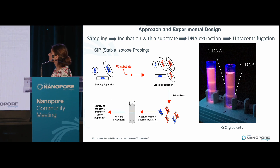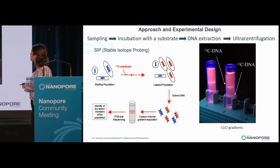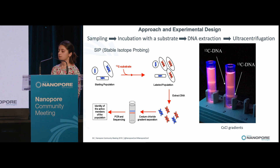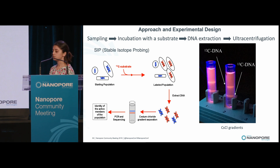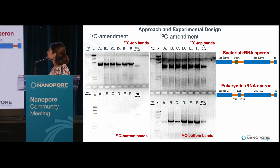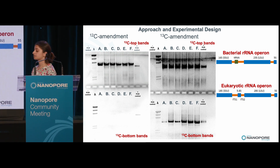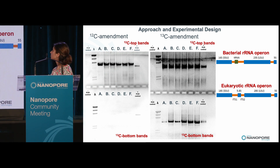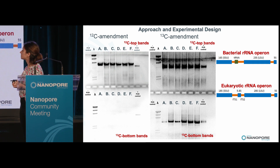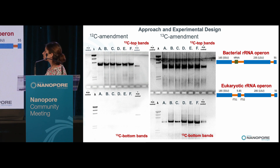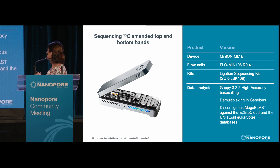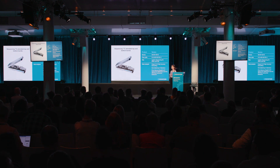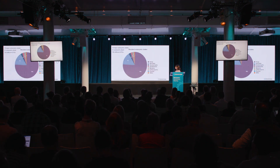We employed stable isotope probing by incubating our samples with carbon-14 amino acids, and this enabled us to physically separate the DNA from these samples and later characterize both the resident community and the active community. We amplified almost full-length bacterial and eukaryotic ribosomal operons and we observed that our C12 controls didn't show any amplification. We sequenced using the R10.9 kit and we BLASTed our reads against the EasyBioCloud 16S database and the UNITE All Eukaryotic database.